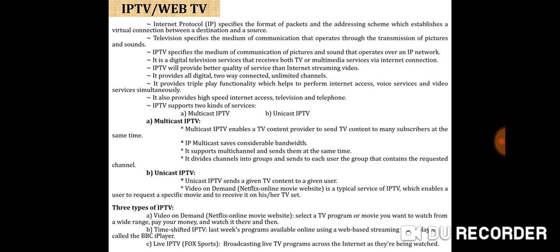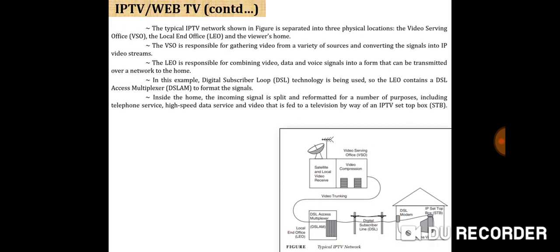There are three types of IP TV. First, video on demand — for example, Netflix or an online movie website — where you select a TV program or movie you want to watch from a wide range, pay, and watch it. Second, time-shifted IP TV, where last week's programs are available online using a web-based streaming video player, like the BBC iPlayer. Third, live IP TV — for example, Fox Sports broadcasting live TV programs across the internet as they are being watched.